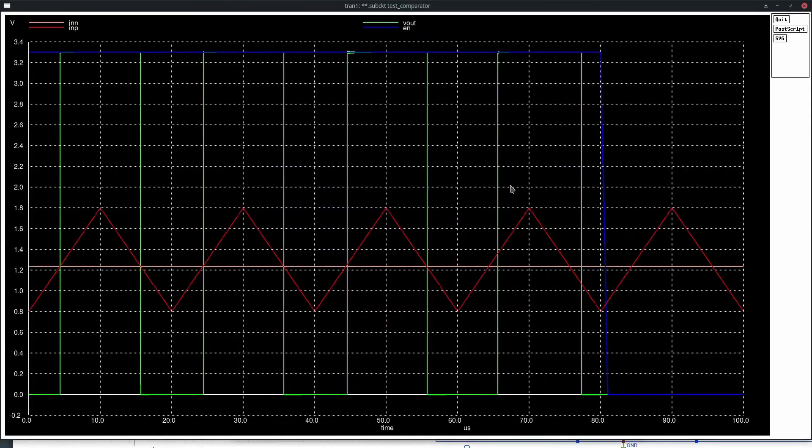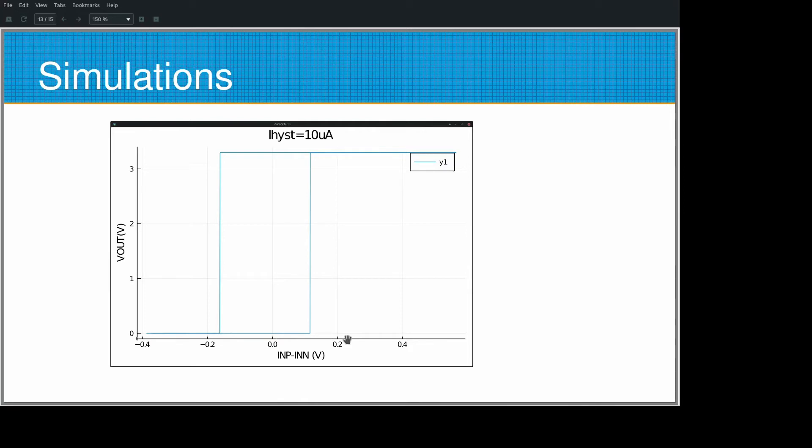Here we get the simulation output. The blue is the enable signal. There are two different levels at which the voltage changes from 0 to 3.3, signifying that there is a hysteresis present and how much it is at 10 microampere.